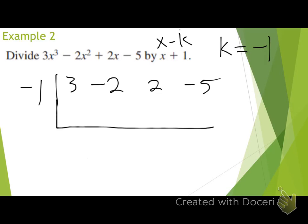I put my negative 1 up here. Bring my 3 down. Multiply negative 1 times 3 — that's negative 3 — which goes under my negative 2. What do I do with the negative 2 and negative 3? Add them. What's negative 2 plus negative 3? Negative 5.